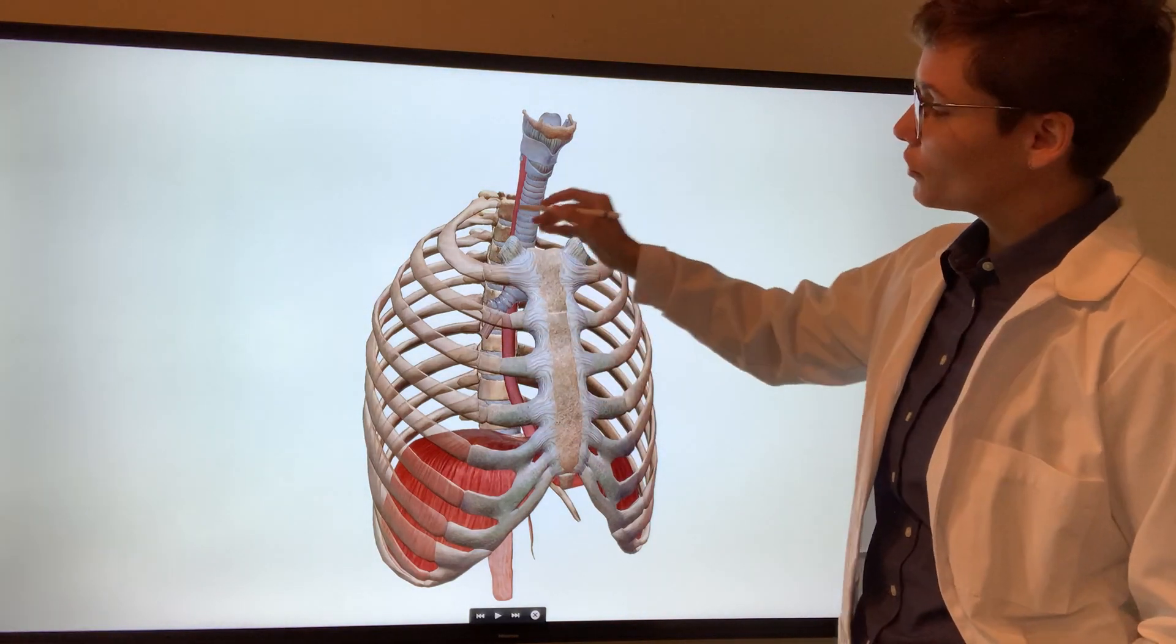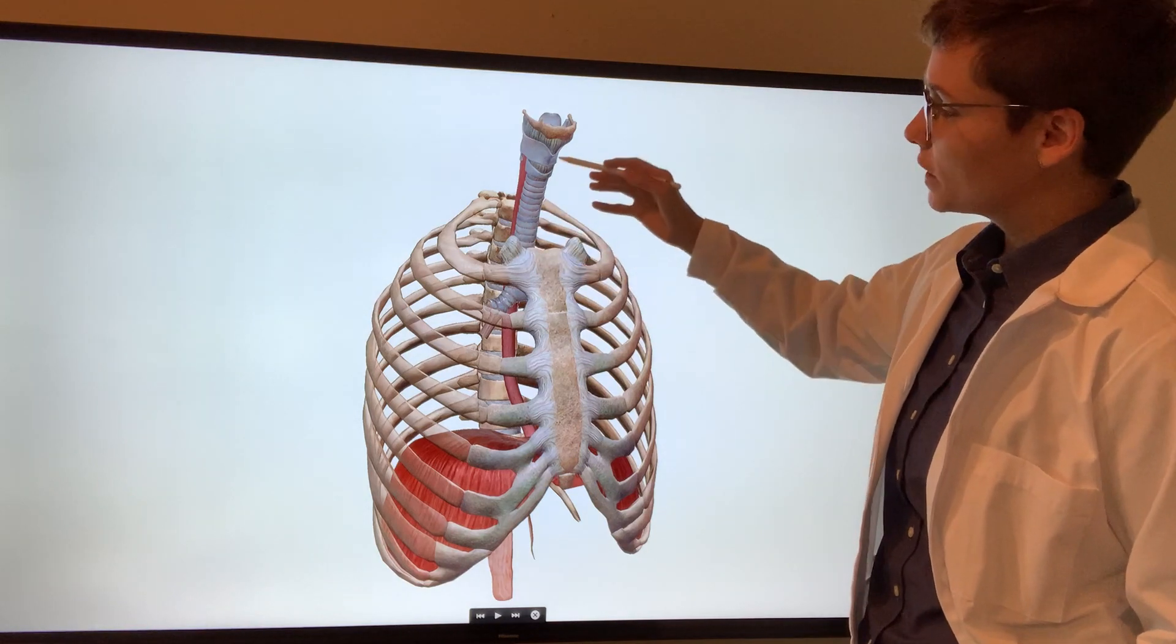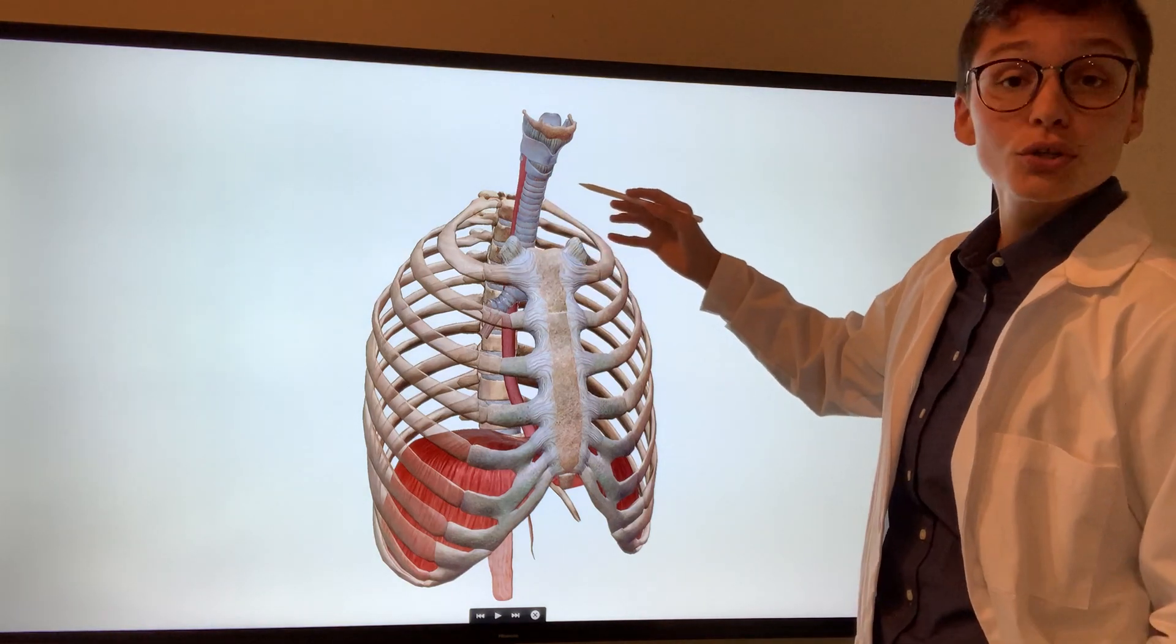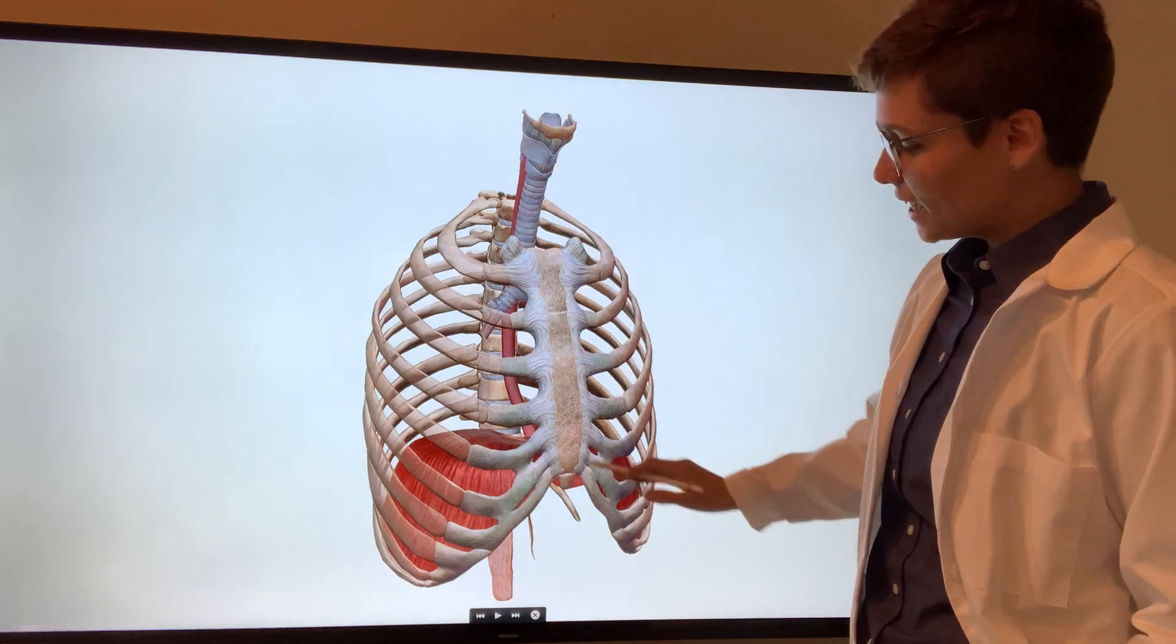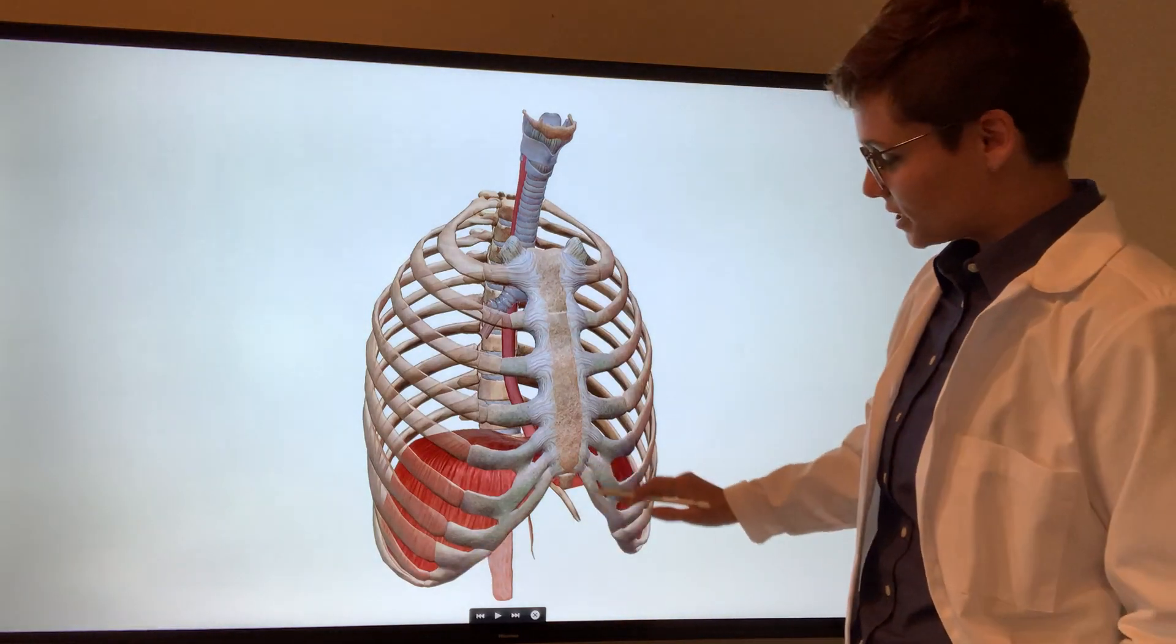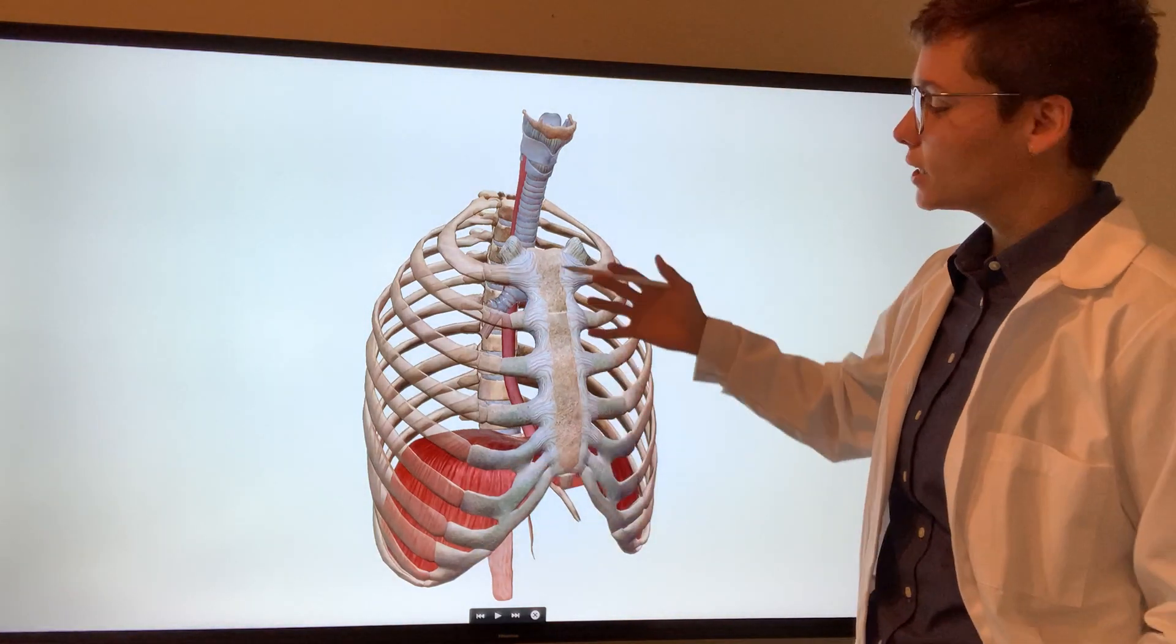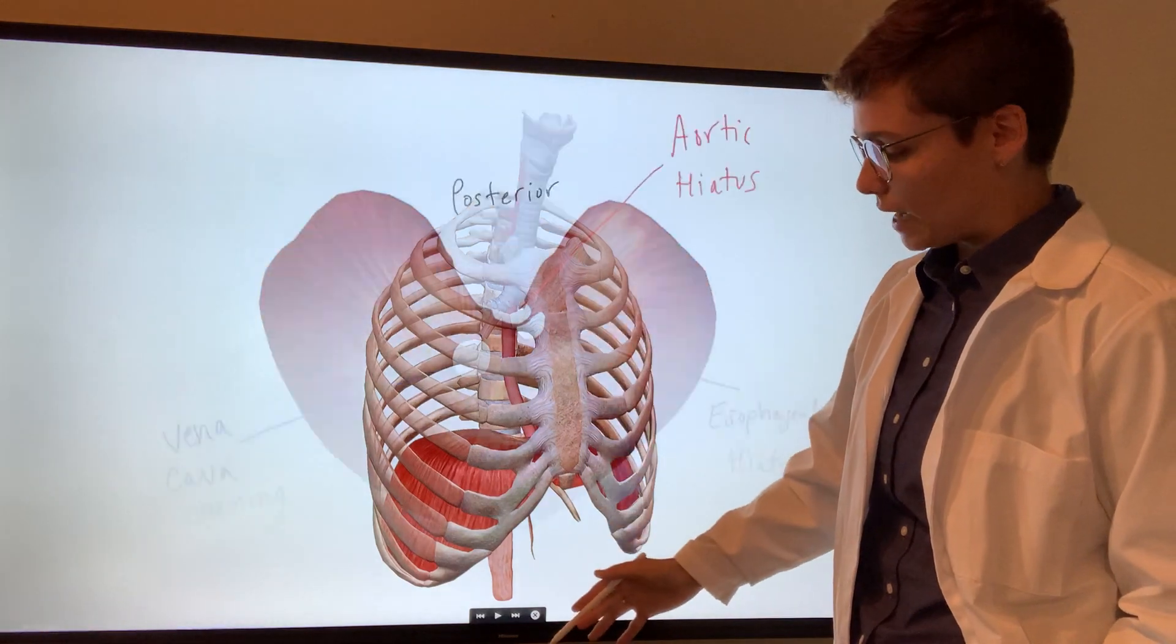And note here the superior thoracic aperture, which provides an opening for the trachea, the esophagus, nerves, and vessels, as well as the inferior thoracic aperture, which is the attachment point for the diaphragm separating the thoracic cavity and the abdominal cavity.